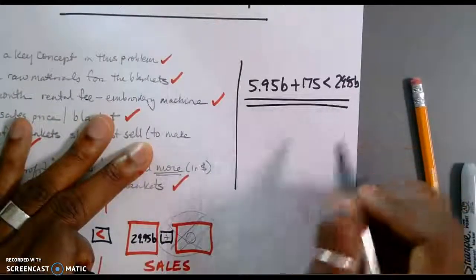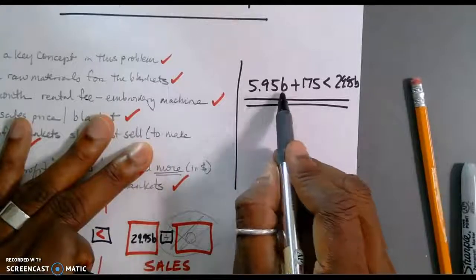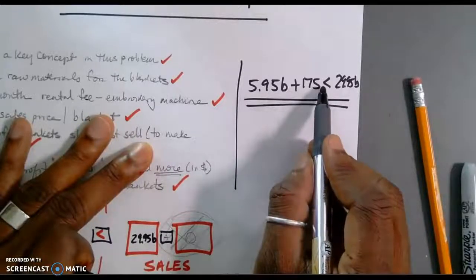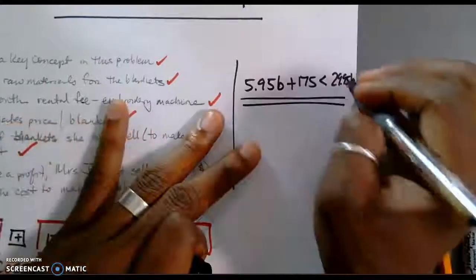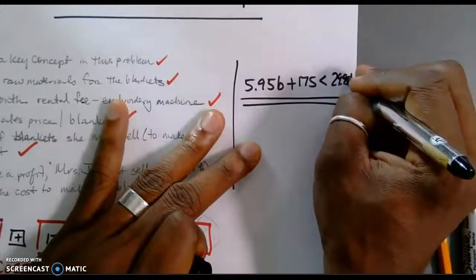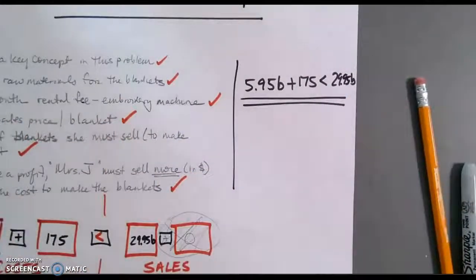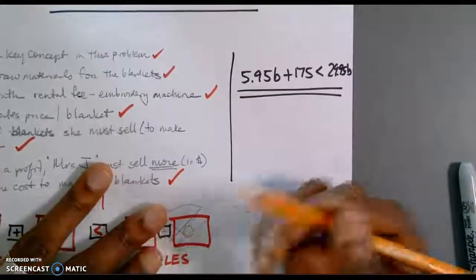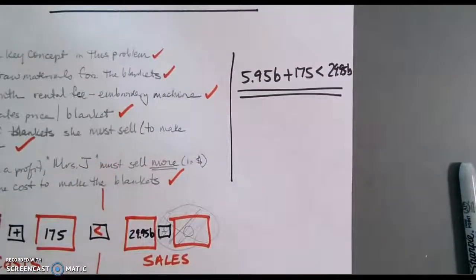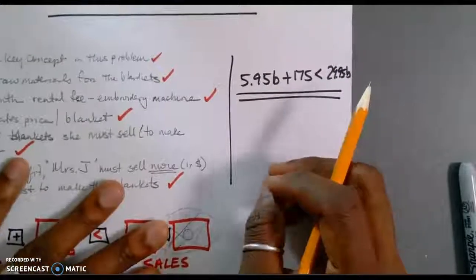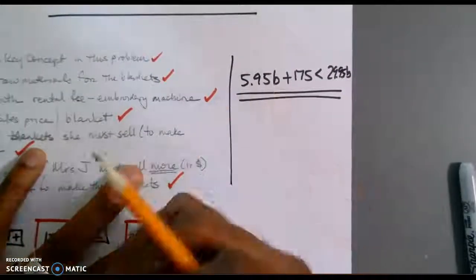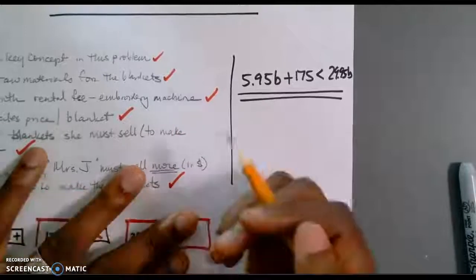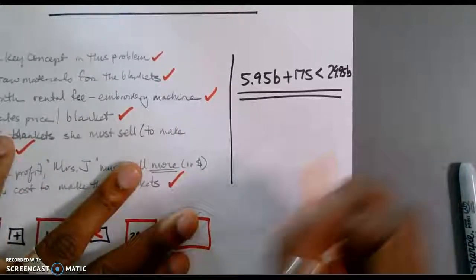I know that I ran out of a little bit of space. So, 5.95B plus 175 must be less than 29.95B. So, what I want to do is I want to go ahead and associate the words because we need to get the essence. I tell my students, we need to get the essence of what the problem actually originally said by mapping out the wording.